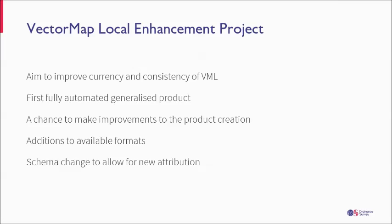To get us started, a quick look at the background of the project and why we've done this. The main driver for starting to change VML was to increase the currency and the consistency that you as users see in the product. To do this we've created an automated process to make VML on a quarterly basis. This creates VML from our large-scale database which feeds most of our large scale products, including things like MasterMap Topography Layer, and is the database that all of the changes our field surveyors and remote sensors are feeding into. So all our change intelligence goes into there, which allows us to keep VML as up-to-date as possible.